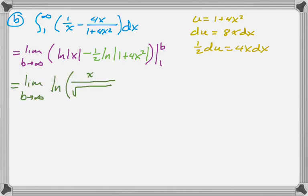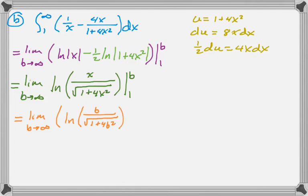So what I'm doing here is I'm using properties of logs. So subtraction becomes division, and coefficients become exponents, to bring me there. And now I have to evaluate this. So it'll be the limit as b approaches infinity. I'm going to substitute in b to get that. And then minus, substitute in 1, and you just end up with the natural log of 1 over radical 5, which I'm just going to leave as that.